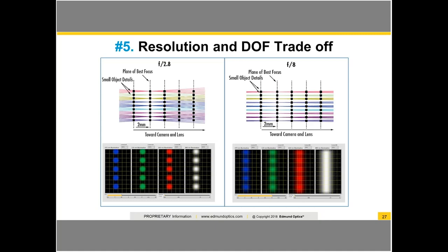Looking at the red wavelength examples: at F2.8 on the left there's much clearer information, but on the right at F8 I've got better depth of field with traded-off detail. The real takeaway is that if you need maximum resolution and a lot of depth of field simultaneously, it's very, very hard—if not impossible—to achieve. Even with the best lens on the market, there is a laws of physics limitation to how far you can push things, and this becomes more impactful as pixels get smaller. In many applications, going to a larger sensor with bigger pixels helps relieve this issue and is a great way to get around some of these trade-offs.